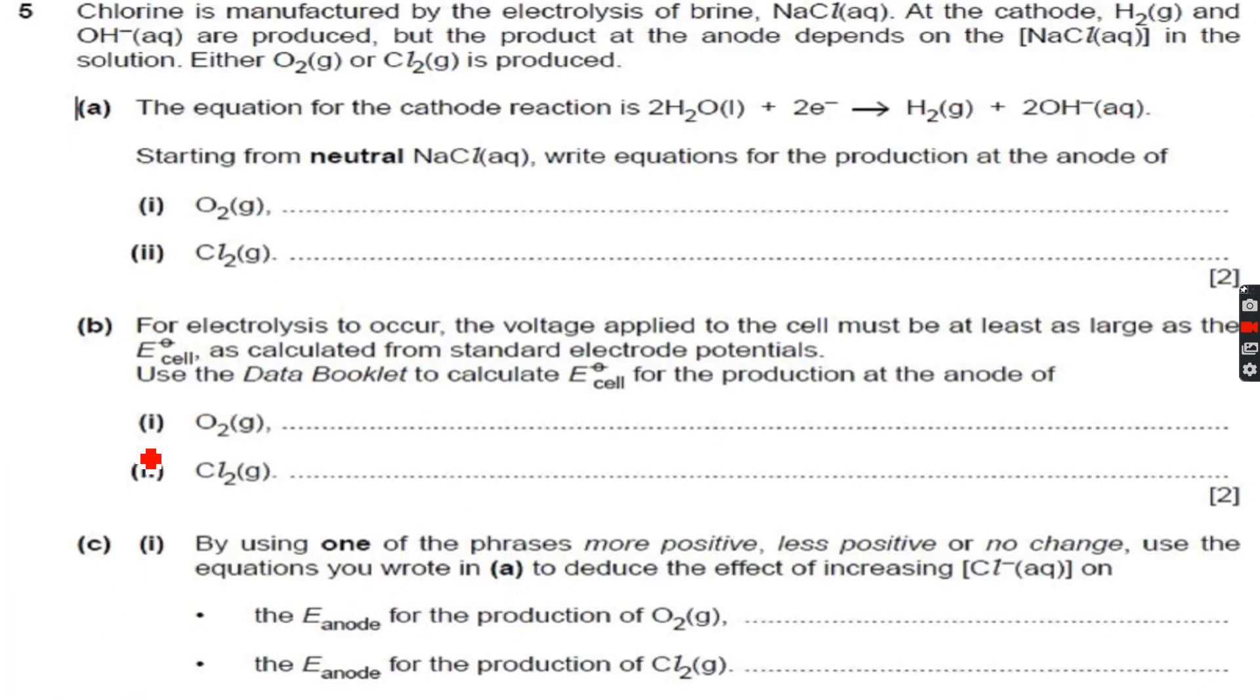This is the last question for this topic. Chlorine is manufactured by the electrolysis of brine NaCl aqueous. At the cathode, H2 gas and OH negative are produced, but the product at the anode depends on the NaCl concentration in the solution - either O2 gas or Cl2 gas is produced. The equation for the cathode reaction is 2H2O plus 2 electrons gives H2 gas plus 2OH negative aqueous.